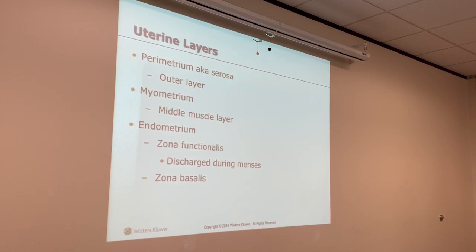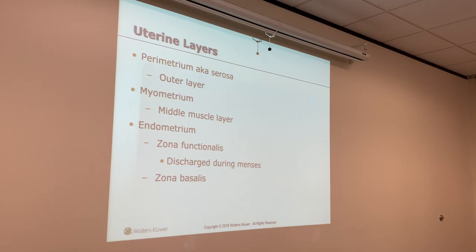Then you've got the endometrium. You've got two layers of the endometrium: the zona functionalis and the zona basalis. The zona functionalis contains the spiral arteries, which are the end of the arteries from the uterine artery all the way down. The spiral arteries are what we slough off every month during our menses.